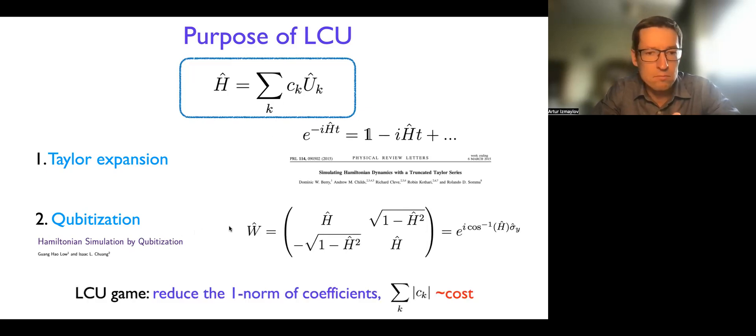And then for us, the main topic of this video will be how to reduce one-norm for the coefficients of the LCU decomposition, right? And because the cost of all these methods scales linearly, practically with this number essentially, right? And so that's all you need to know. And this is our sole purpose is to reduce the one-norm.